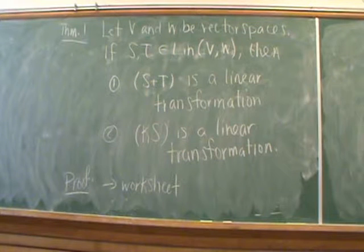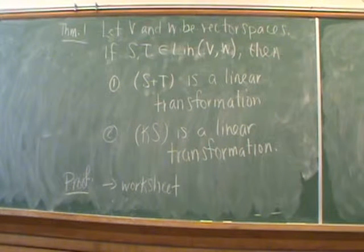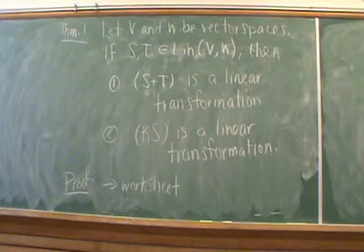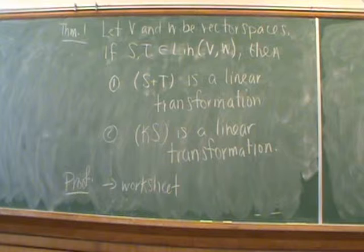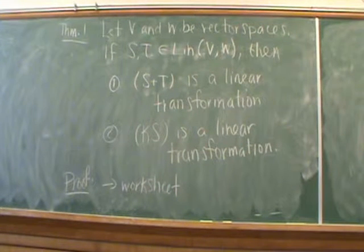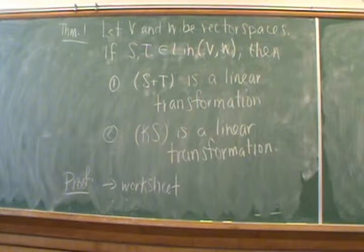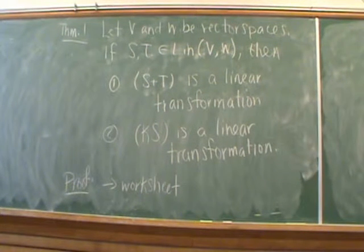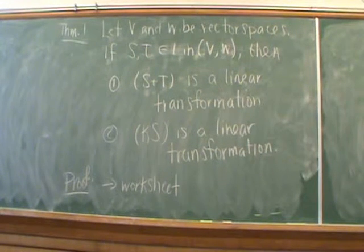The ideas in Theorem 1 have been alluded to in the last two examples. If V and W are vector spaces and S and T are linear transformations from V to W, then it's always going to be true that S plus T is a linear transformation and k times S is a linear transformation. We're going to prove this on one of the worksheets in class.